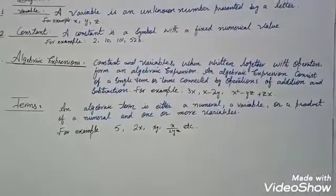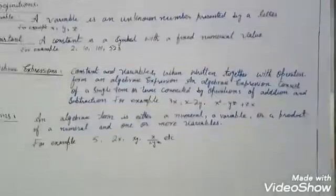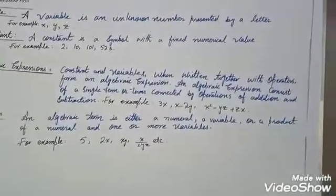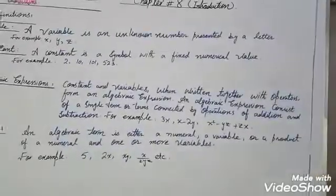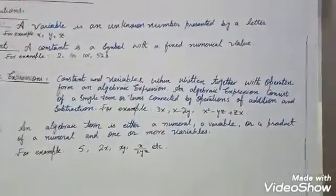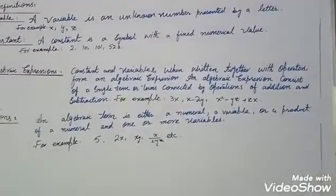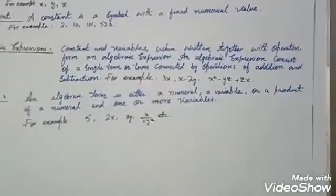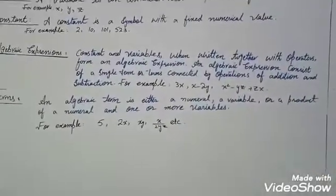Then comes the algebraic expression. Constants and variables when written together with an operator form an algebraic expression. An algebraic expression consists of a single term or terms connected by operations of addition and subtraction. For example, 3x is the first term. 3 is a coefficient because it is multiplied by the variable. When any constant number is multiplied by a variable, the constant number becomes the coefficient.